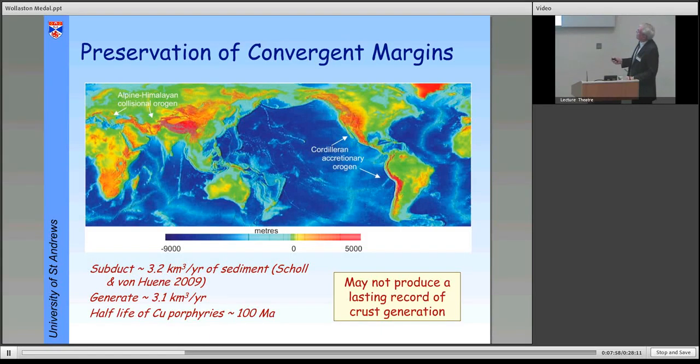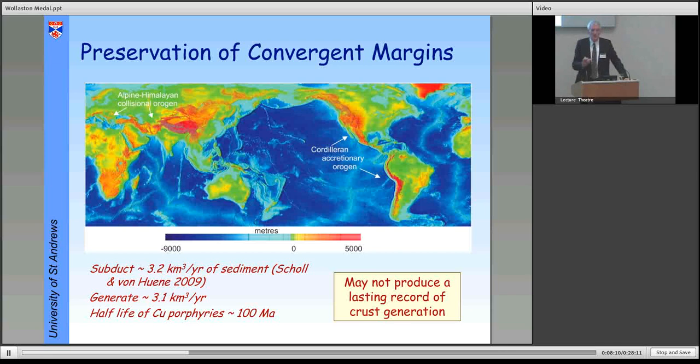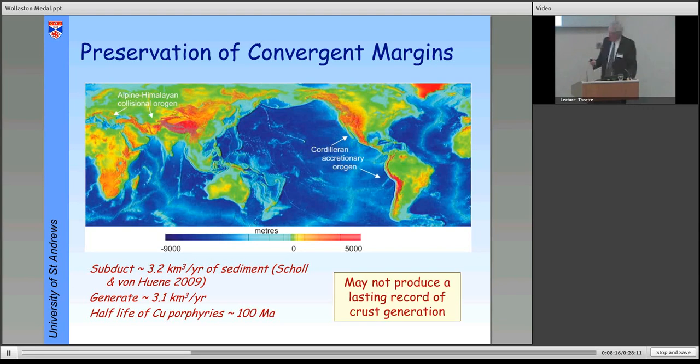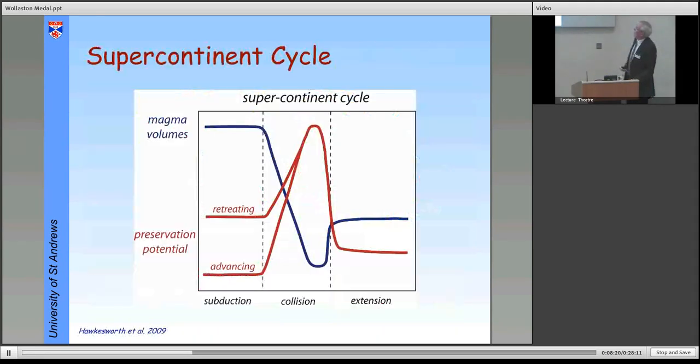So as a place to make a long-standing record of the continental crust, this doesn't look to work very well. So you make lots of it and you destroy lots of it. Conversely, if you go to places protected from destruction, to the Himalayas or to a collision zone, the volumes of magma you make are much less, but their preservation potential, the chances of it surviving, are much greater. So if we try and put those together, just as a kind of thought experiment, what might we see?